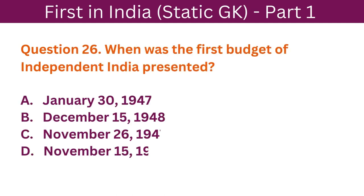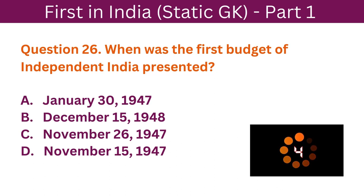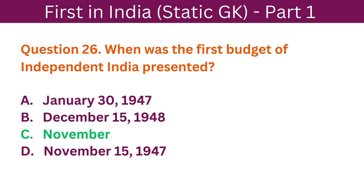Question 26: When was the first Budget of Independent India presented? A. 30th January 1947. B. 15th December 1948. C. 26th November 1947. D. 15th November 1947. The correct answer is C. 26th November 1947.